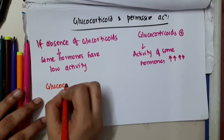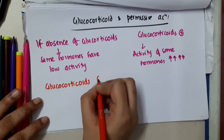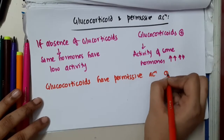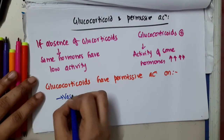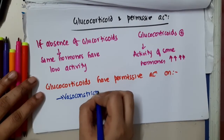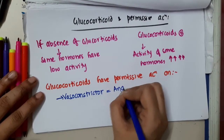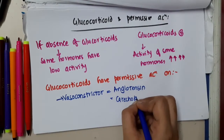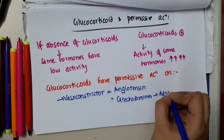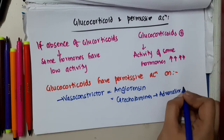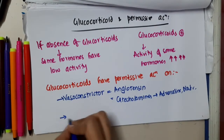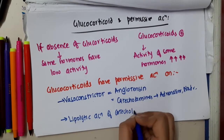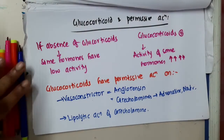So glucocorticoids have permissive action on which hormones? They have permissive action on vasoconstrictors, especially angiotensin. They also have a permissive vasoconstrictive action on catecholamines like adrenaline and noradrenaline. Additionally, they have a permissive effect on the lipolytic action of catecholamines. So this is about the permissive action of glucocorticoids.